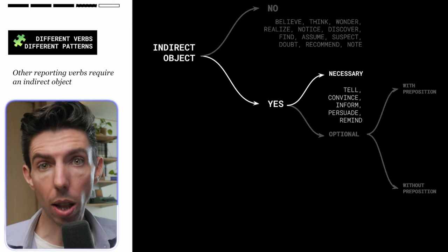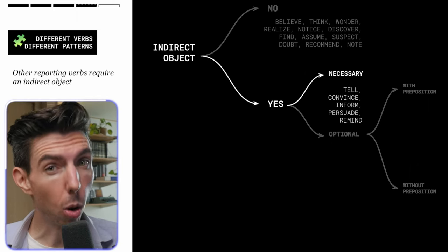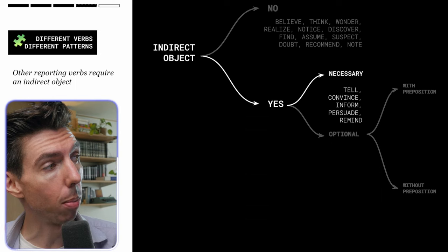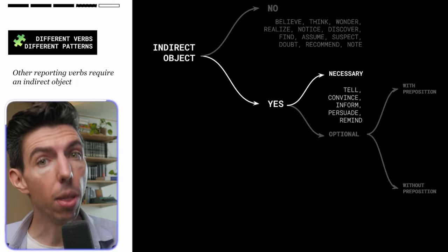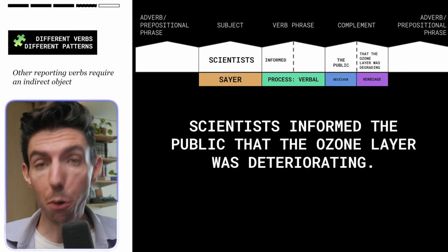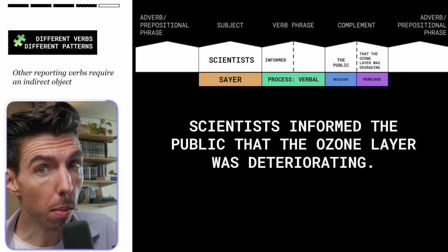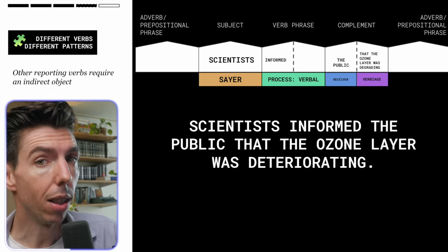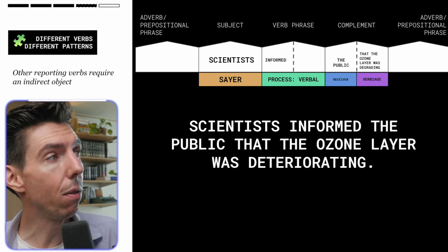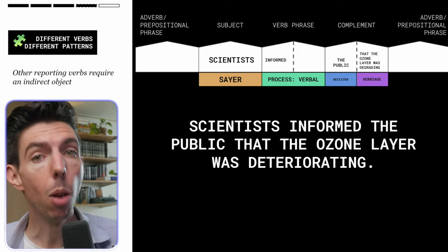All other reporting verbs do allow an indirect object, and some even require it. The verbs tell, convince, inform, persuade, and remind cannot be used without an indirect object. A very common mistake is with 'inform' — you cannot just inform information; you need to inform a person. Scientists inform the public — the public is the receiver — that the ozone layer was degrading. You cannot use 'inform' without an indirect object.